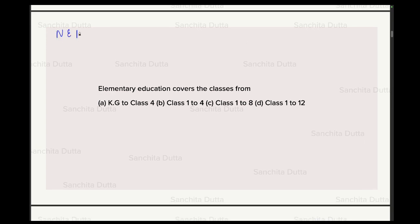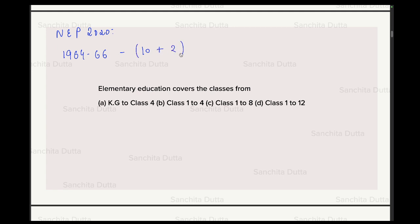Let's briefly discuss NEP 2020 and how the education system is structured. From the 1964–66 Kothari Education Commission, the 10+2+3 school education system has been running. Now in NEP 2020, the new education policy of India changes this to a 5+3+3+4 structure.